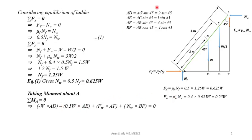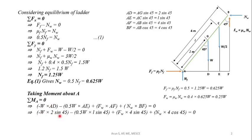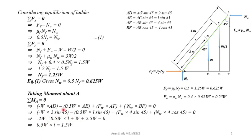Substituting AD = 2 sin 45°, AE = L sin 45°, AF = 4 sin 45°, BF = 4 cos 45°, and the values of FW = 0.25W and NW = 0.625W: rearranging with sin 45° canceling, we get 2W − 0.5W × L + 2.5W = 0 ... wait, rearranging: 0.5W × L = 1.5W. Therefore L = 3 meters. The distance the man climbs before the ladder starts slipping is L = 3 meters.